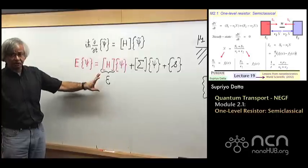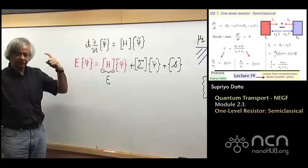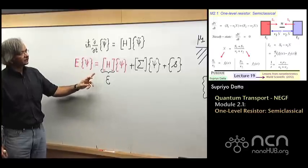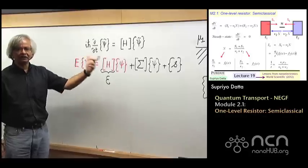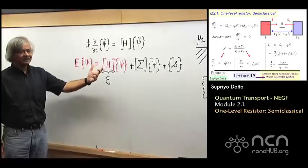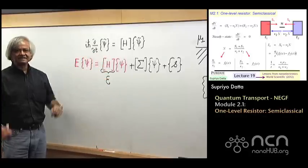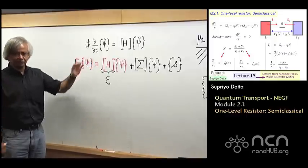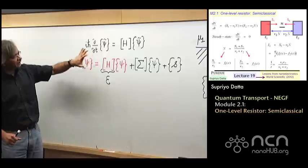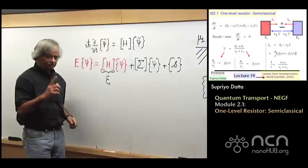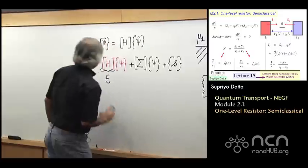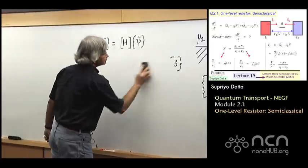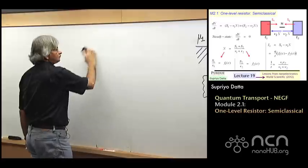So I'll come back to this Schrödinger equation then again in module 2 of this week. But for the moment, let me first try to explain how you do the one-level device in a, what you might call, a semi-classical way, that is, without bringing in wave functions, in a common sense way. Let's first do that one, and then we'll come back to it in the next module.